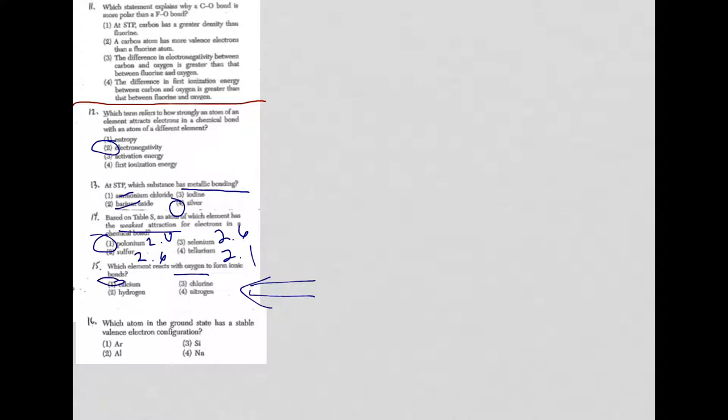Okay, finally, question 16. Which atom in the ground state has a stable valence electron configuration? Well, stable valence electron configuration means that I have an element or atoms of an element that don't want to bond with anything else. That, of course, means we're dealing with noble gases. This almost sounds like a question you might have put under periodic table as well.